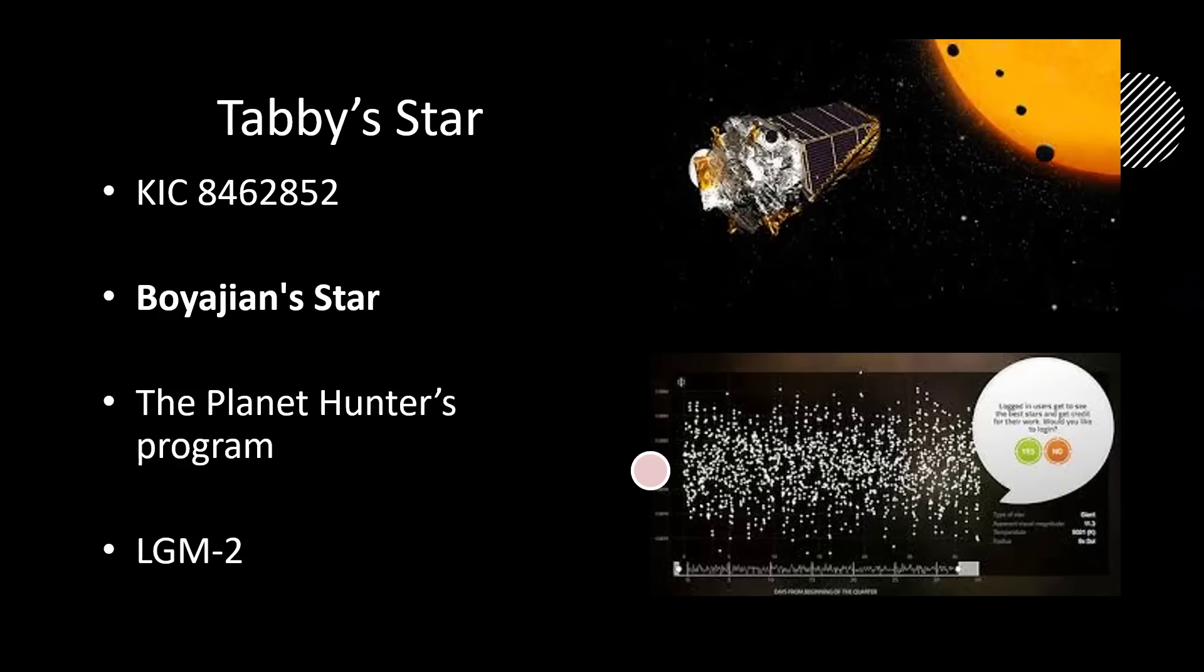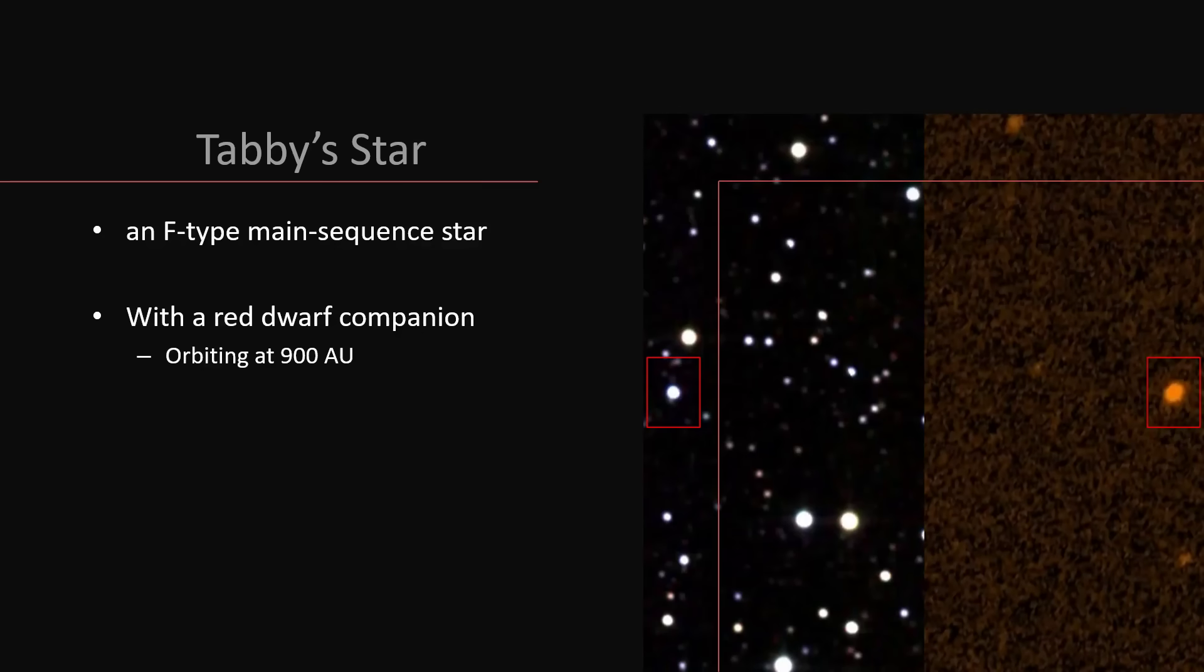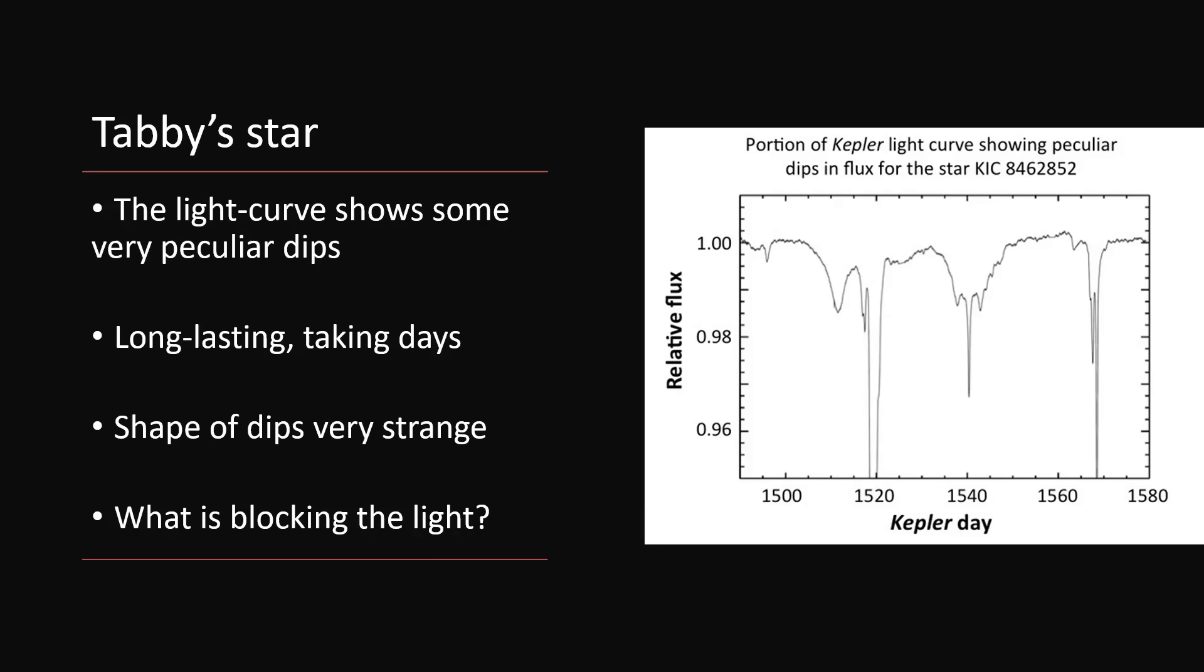So let's take a look at what I will call Tabby's Star from now on, named after Tabitha who was the person who promulgated the discovery. It's an F-type main sequence star, so nothing very unorthodox, just a little bit hotter than our sun. It's a double star, it has a red dwarf companion orbiting around it about 900 astronomical units away. An AU, the Earth-Sun distance, 30 AU would be the distance to Neptune, so this is quite a long way away, 30 times the distance of Neptune.